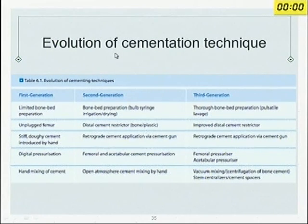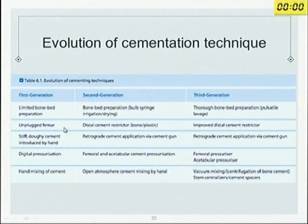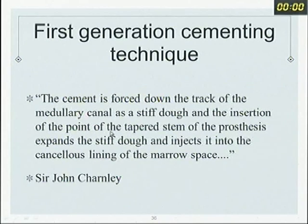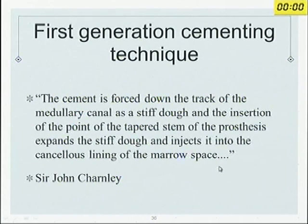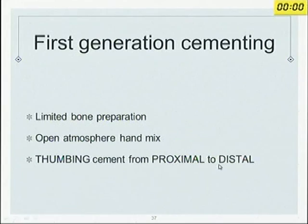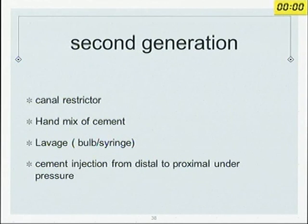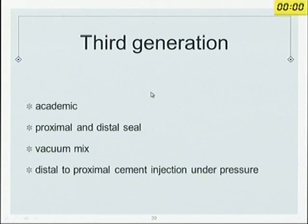The evolution of cement technique spans three generations. First generation: limited bone bed preparation, unplugged femur, no distal plug, stiff doughy cement introduced by hand. Second generation: a canal restrictor is placed, cement hand-mixed, lavage by syringe, and cement injected from distal to proximal using a cement gun. Third generation: both proximal and distal seals are used, cement mixed with vacuum and injected under pressure.